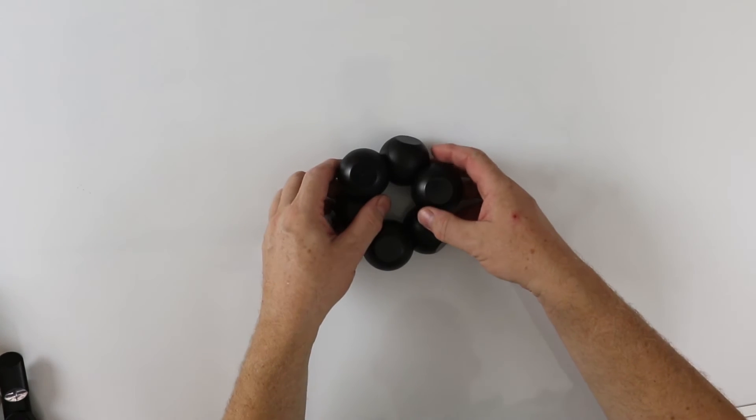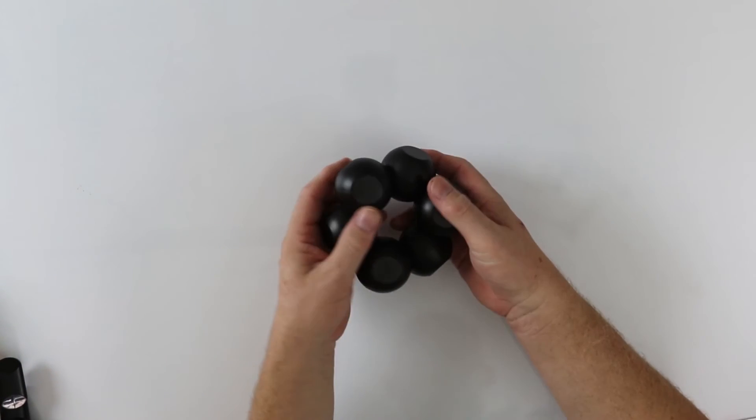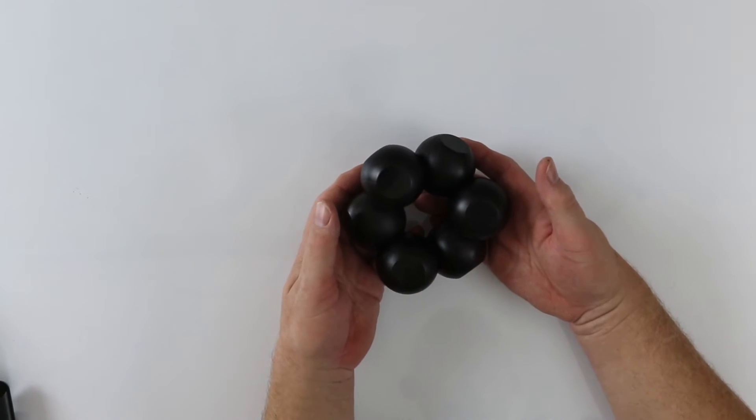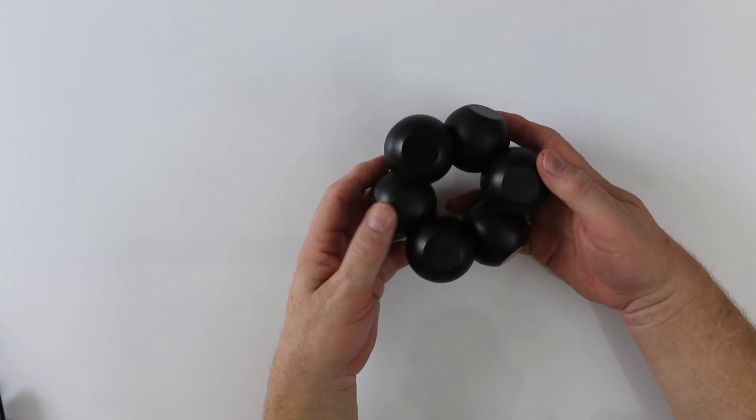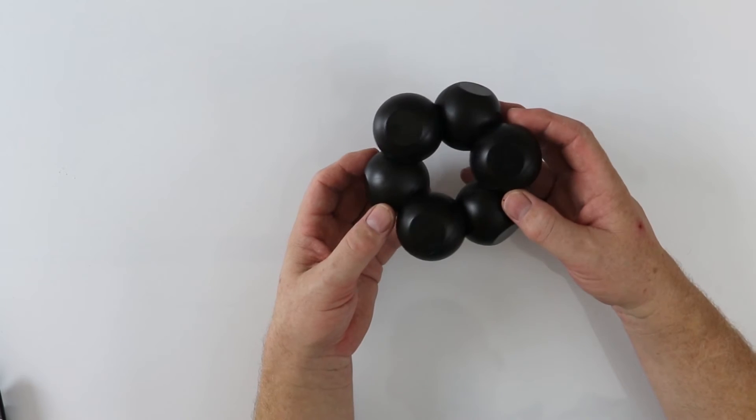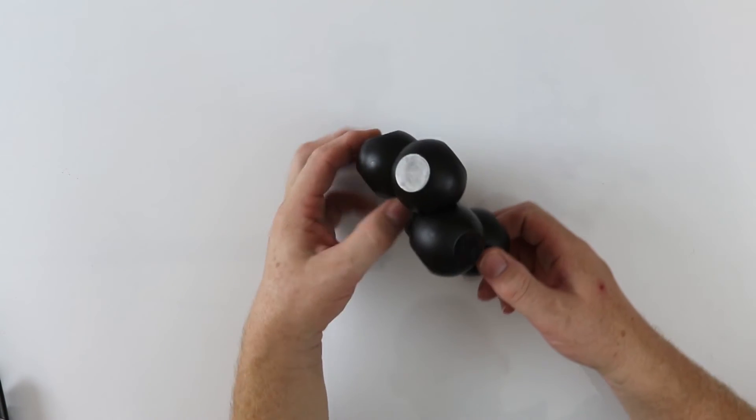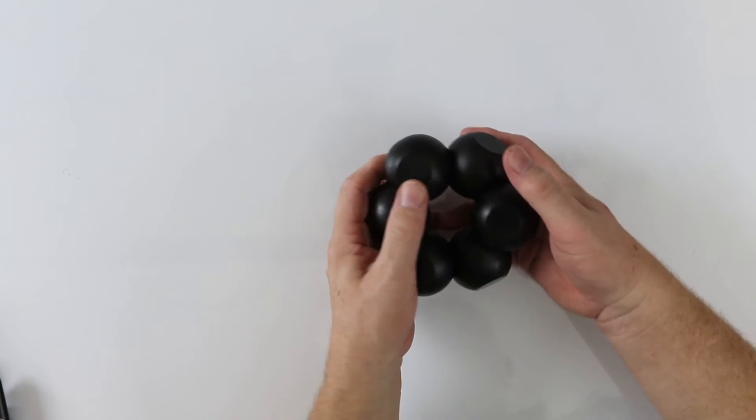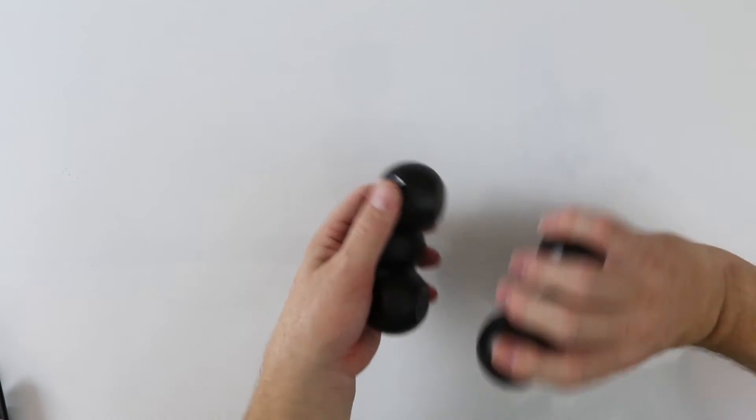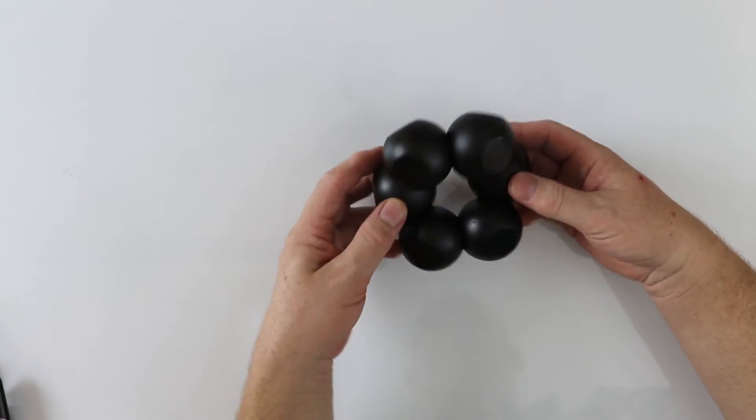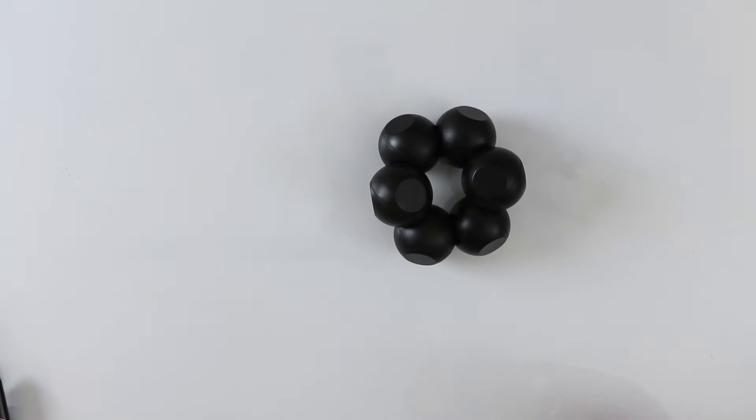This is the same ring, this cyclohexane ring, but what I've done is I've taken all the hydrogens off. Perhaps in this form you can see more easily the chair shape and if I switch it round, the boat shape.